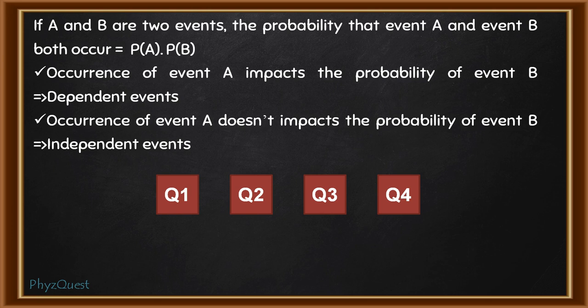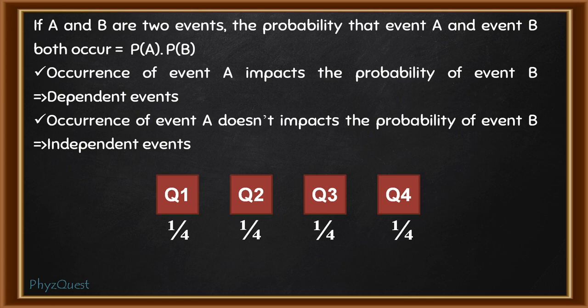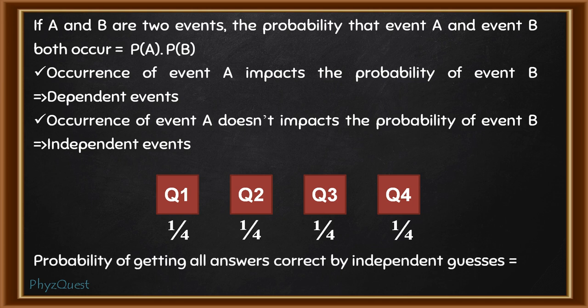So, there are 4 questions and each of them has 4 choices. For one question, we have calculated the probability as 1 by 4. The second question is also the same — it has 4 choices and one is correct, so its probability is also 1 by 4. Third also has probability 1 by 4, and the fourth will also have probability 1 by 4. According to the rule, when more than one event are occurring together, we multiply the probabilities. So the probability of getting all answers correct by independent guesses will be 1 by 4 whole to the power 4.